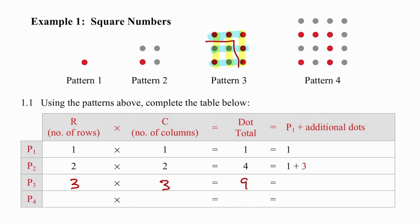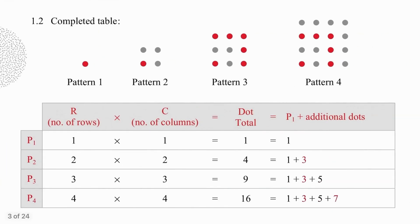Now we are going to add in the additional dots that have been added. So we had one and three from before. Now we're bringing in five. Pause the video and try pattern four on your own. So four rows, four columns. The product is 16 and we added seven additional dots.